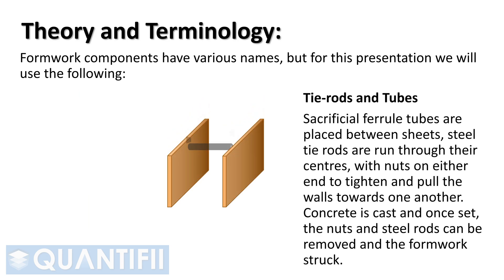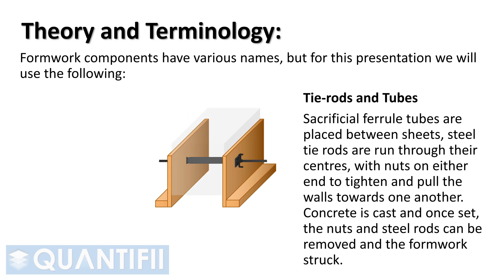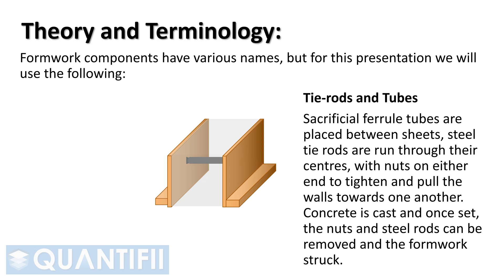Tie rods and tubes — sacrificial ferrule tubes are placed between sheets. Steel tie rods are run through their centers, with nuts on either end to tighten and pull the walls towards one another. Concrete is cast, and once set, the nuts and steel rods can be removed and the formwork struck.